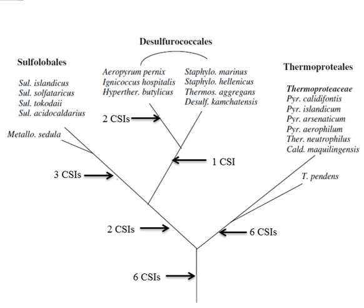Recently the phylogenetic relationship of the group Thermotogae was characterized based on the CSI approach. Previously no biochemical or molecular markers were known that could clearly distinguish the species of this phylum from all other bacteria. More than 60 CSIs that were specific for the entire Thermotogae phylum or its different subgroups were discovered. 18 CSIs are uniquely and specifically present in various Thermotogae species and provide molecular markers for the phylum. Additionally there were many CSIs that were specific for various Thermotogae subgroups. 12 CSIs were specific for a clade consisting of various Thermotogae species except T. lettingae.